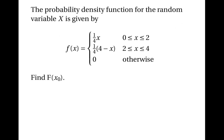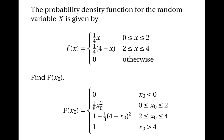Putting all this together: F of x0 equals 0 when x0 is less than 0; an eighth of x0 squared when x0 is between 0 and 2; 1 minus an eighth of (4 minus x0) squared when x0 is between 2 and 4; and 1 when x0 is greater than 4. That's the first method for converting a probability density function into a cumulative distribution function — remember, it only works when the graph is linear, made up of straight lines.